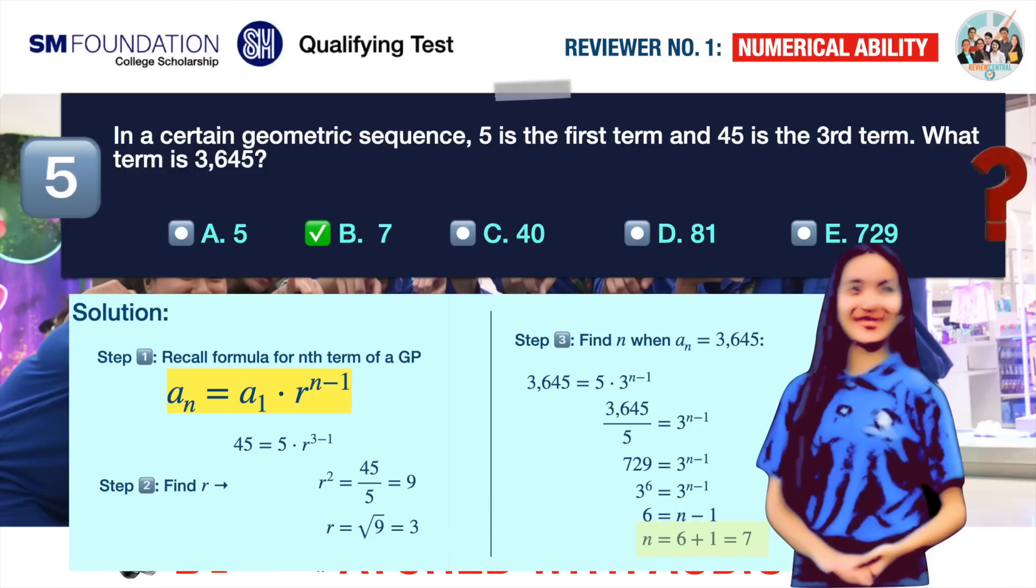Alternatively, if you don't know the formula, you can just keep multiplying by 3, starting from 5, until you reach 3645. You should get to 3645 on the sixth cycle. Counting the products, including 5 as your first term, you should have 7 terms. The fastest way to solve this is to keep multiplying by 3, starting from 5, using a calculator if you are allowed one in your exam. Just make sure to do your counting very carefully.